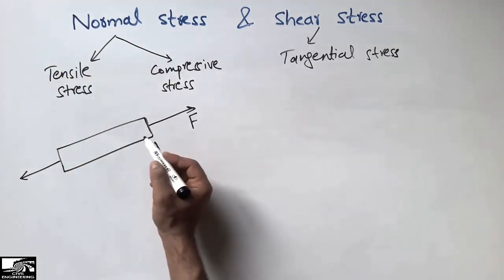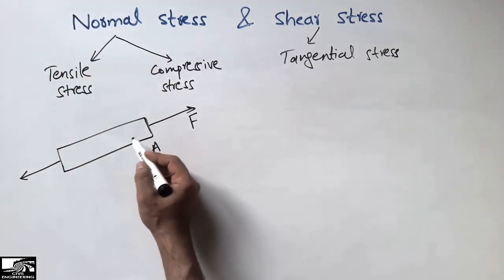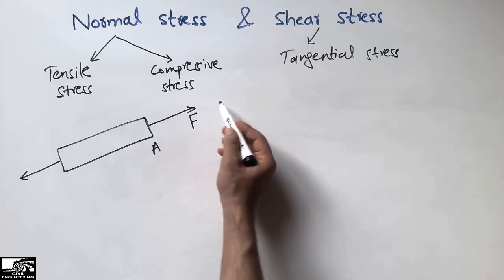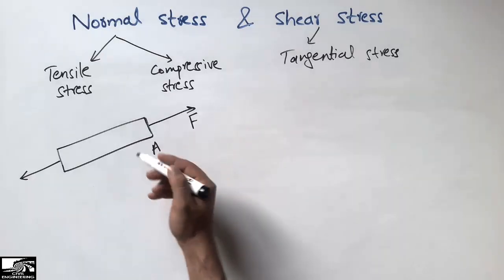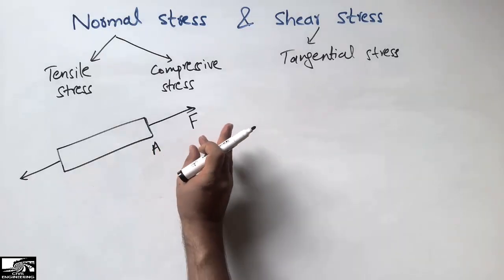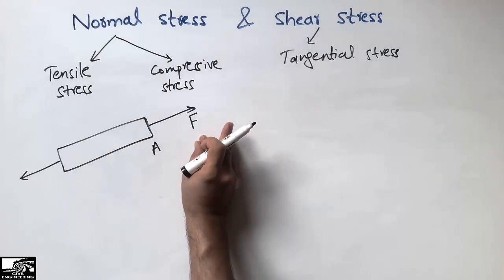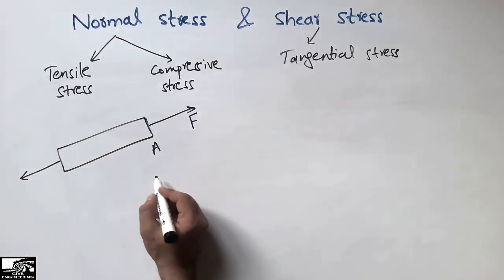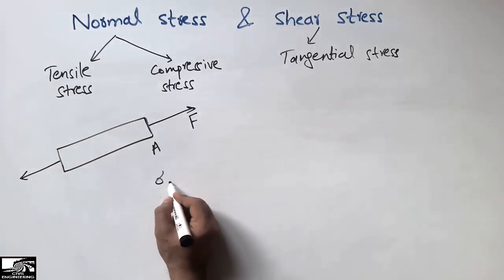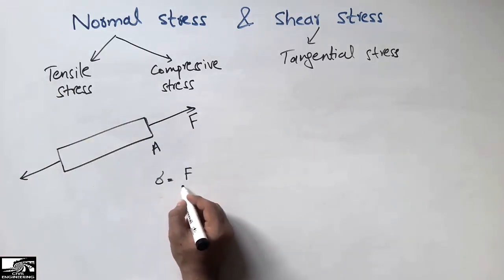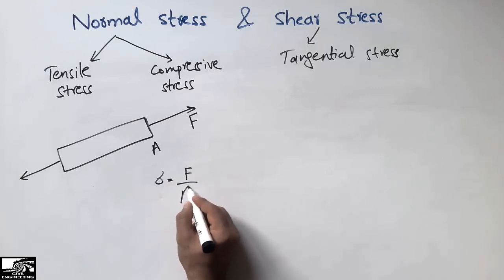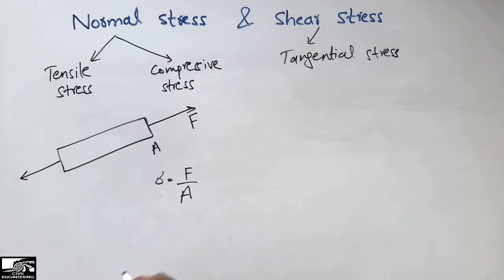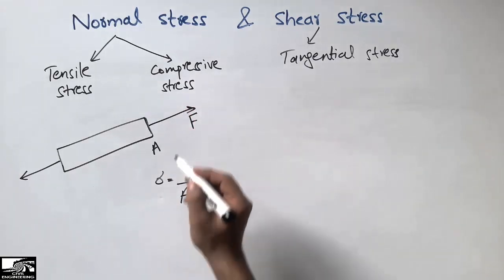When this force acts in the tensile direction — when it stretches the member — this stress is called tensile stress. Its formula is simply normal stress equals force divided by area (F/A).